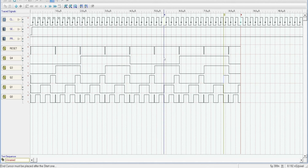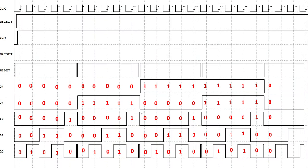That means depending on the order in which these counters are cascaded, we can get different duty cycles at the output. Moreover, in this case the output sequence is different from the previous case — the output is not following the binary number sequence. Although it is a mod 20 counter, its output sequence differs from the one designed with mod 4 followed by mod 5. But in both cases, the output frequency equals f/20.